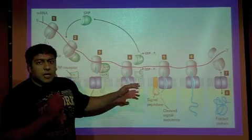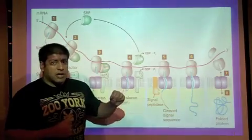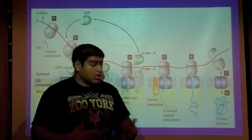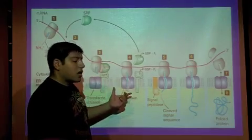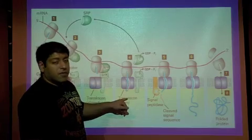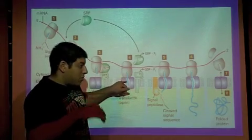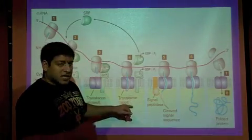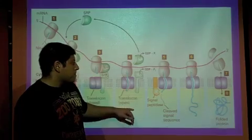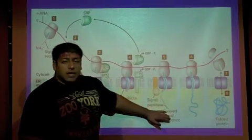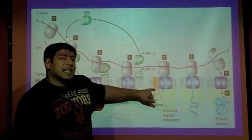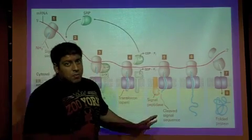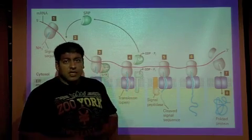And then, when the SRP leaves, because it's been released now, that means that the A site of the ribosome is now available. So translation restarts. And as that happens, the translocon has opened up. And now the N-terminus of the protein is threaded through the translocon into the ER. The rest of the protein continues to be made because, again, translation has been restarted. And as the protein comes through, there's another enzyme, an ER resident enzyme, called the signal peptidase. The signal peptidase is simply going to clip off the signal sequence.